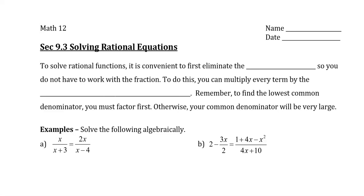In this video I'm going to show you how to solve rational equations. To solve rational equations it is convenient to first eliminate the denominator so that you don't have to work with a fraction. To do this you can multiply every term by the lowest common denominator — every single term on the left side and the right side, whether it's a constant or whether it's a variable.